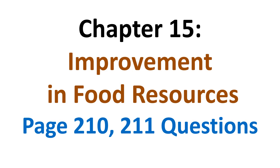Hello students, 9th class NCERT science book chapter number 15: Improvement in Food Resources. We are going to do four in-text questions given on page number 210 — it has one question — and on page number 211 there are three questions. Listen to the video very carefully, note down all the answers, and later make sure you practice writing the answers on your own.